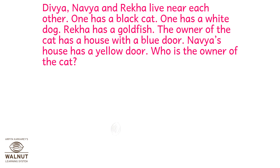Next question: Divya, Navya, and Rekha live near each other. One has a black cat. One has a white dog. Rekha has a goldfish. The owner of the cat has a house with a blue door. Navya's house has a yellow door. Who is the owner of the cat?